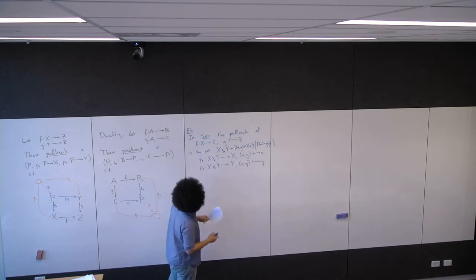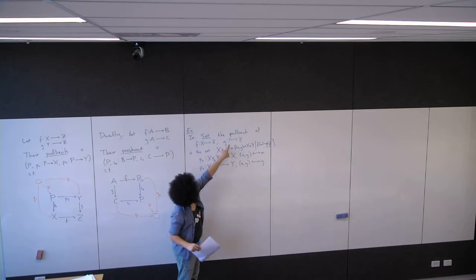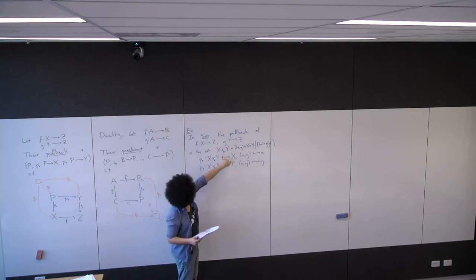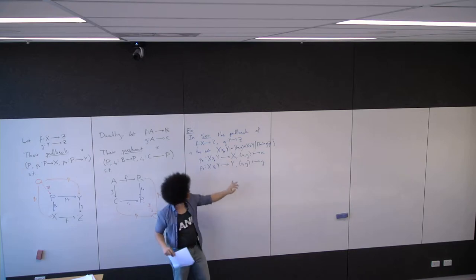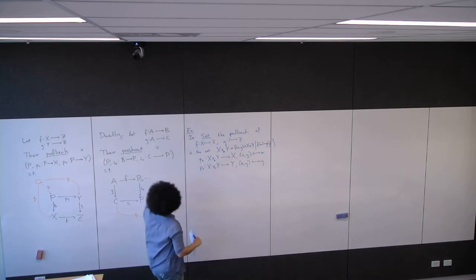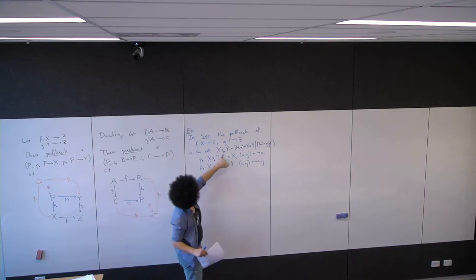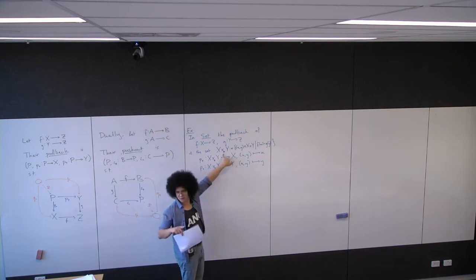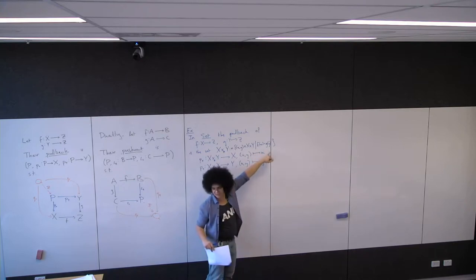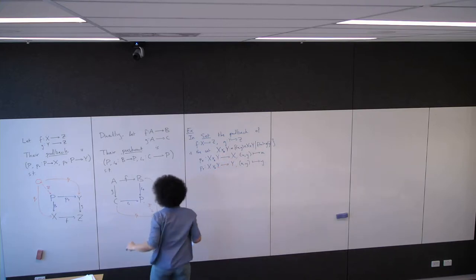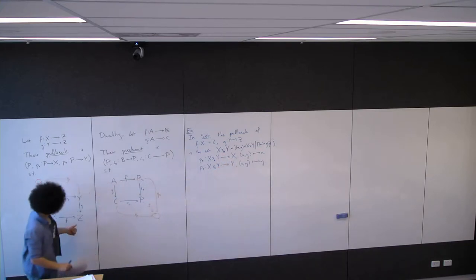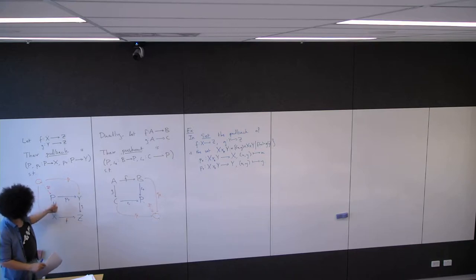Note that if Z is the terminal object, then this is just going to be the product. If Z is a one-element set, then f(x) = g(y) is always true for all elements of X × Y, so this is just X × Y. It is in fact true in general that if Z is the terminal object, this is just the product.